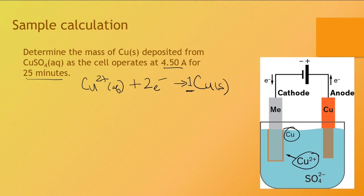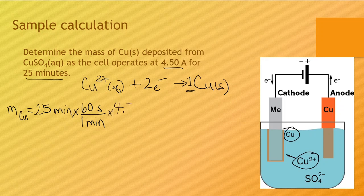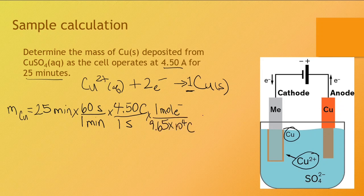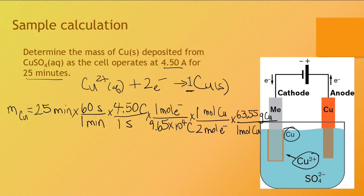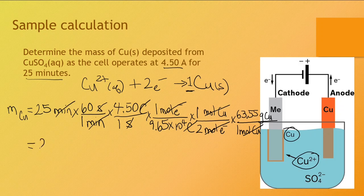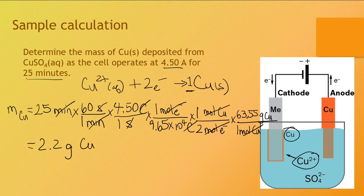So this cell will deposit 2.2 grams of copper. And due to the operation of the cell and that half reaction being reduction, that would occur at the cathode as indicated in the diagram.